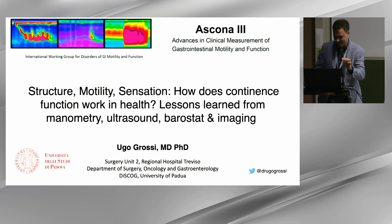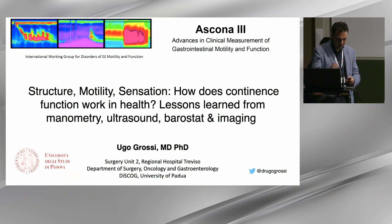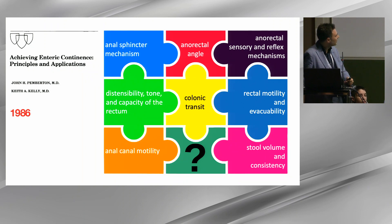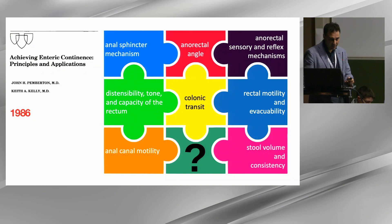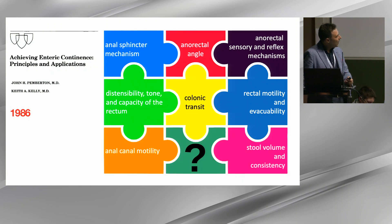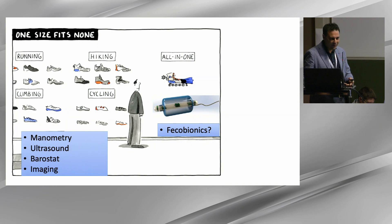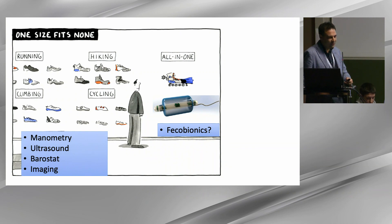Thank you. So let's go — I'm trying to continue the story. We're striving to find what's behind the maintenance of human continence. In this seminal work dating back almost 40 years ago, John Pemberton and Kate Kelly identified at least eight mechanisms behind the maintenance of human continence. As you can see, there are anatomical, physiological factors, and also colonic transit and stool volume and consistency. We are striving to find the holy grail of testing. Several tests have come into our practice.